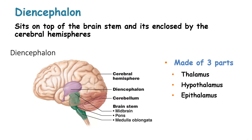The diencephalon sits on top of the brain stem and is enclosed by the cerebral hemispheres. The diencephalon is made of three parts: the thalamus, the hypothalamus, and the epithalamus.